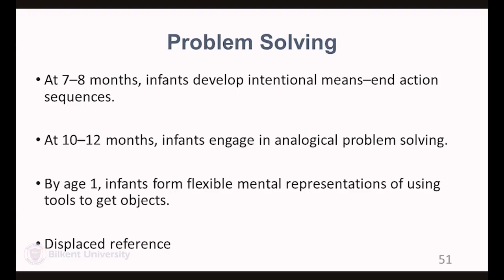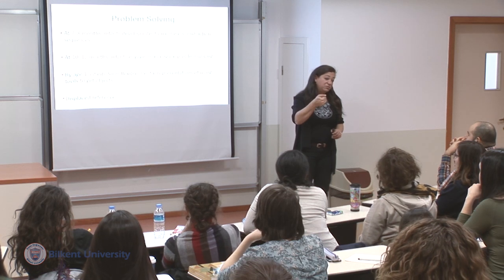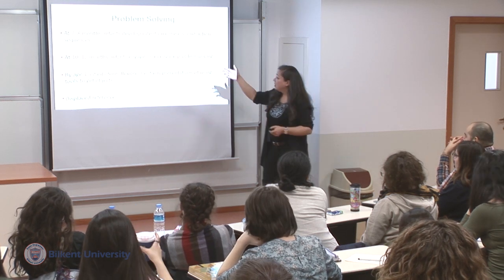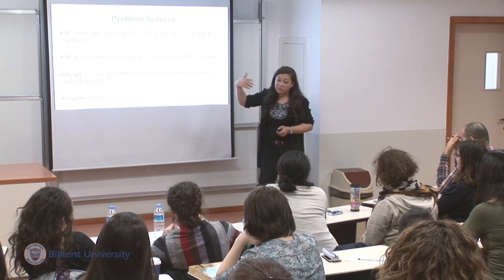Problem solving: at seven to eight months, infants develop intentional means-end action sequences. At ten to twelve months, they engage in analogical problem solving — trial-and-error method, solving problems by doing. By one year of age, they form flexible mental representations for using tools to get objects, and they can make inferences about displaced objects — objects no longer present. This is thought to occur a little earlier than Piaget thought. For him, trial and error still exists in substage five, which is twelve to eighteen months.